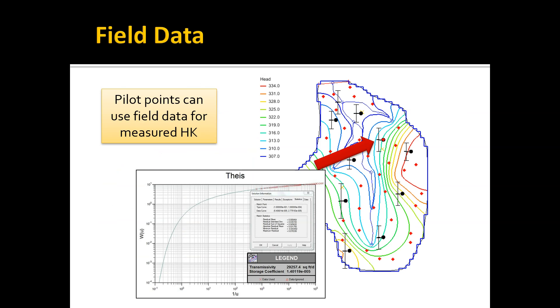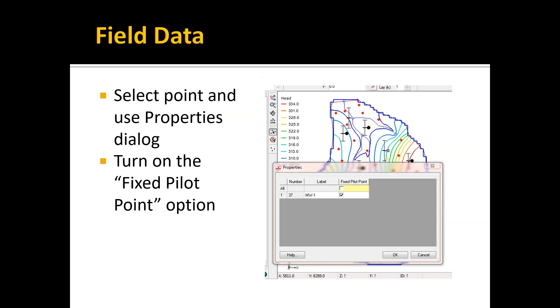Finally, I mentioned before that if you've performed a pump test at one of your monitoring well locations, that gives you an estimated hydraulic conductivity for that location. You can incorporate that in your pilot point method. You basically create a pilot point at the location of your pump test, and if you select that point and double-click to bring up the properties dialog, there's a little toggle you can turn on to mark that as a fixed pilot point.